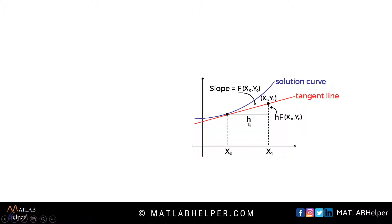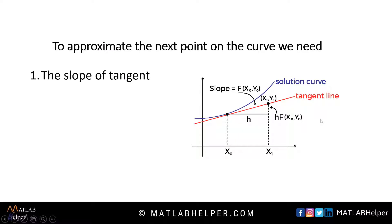Now again you move by distance h on the tangent line such that you find the point x2, y2 on the solution curve, which is an approximation to the solution curve, and so on and so forth. So the important things we need for this method are: first, the slope of the tangent — the slope of the red line shown here — and the step size h.